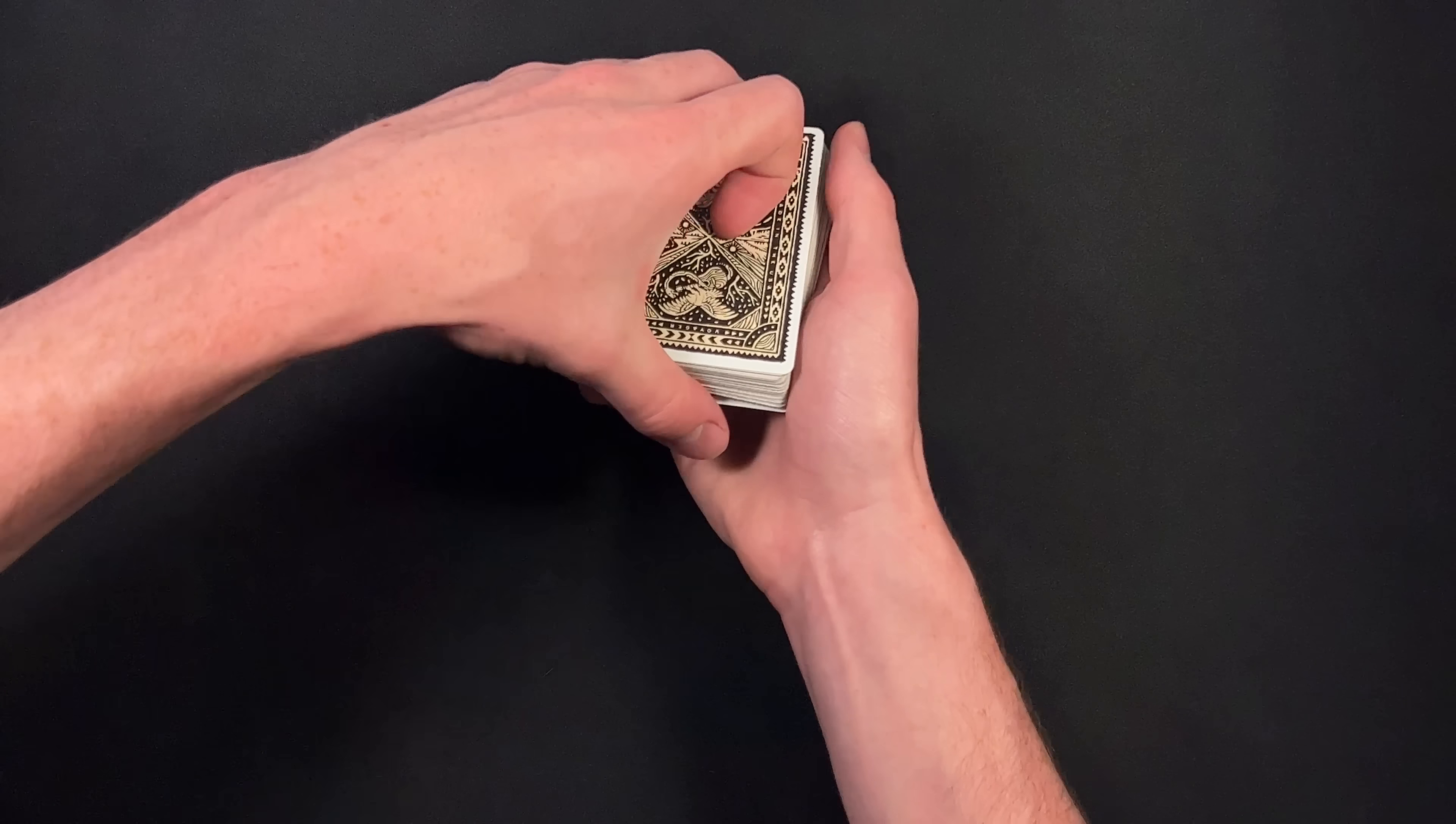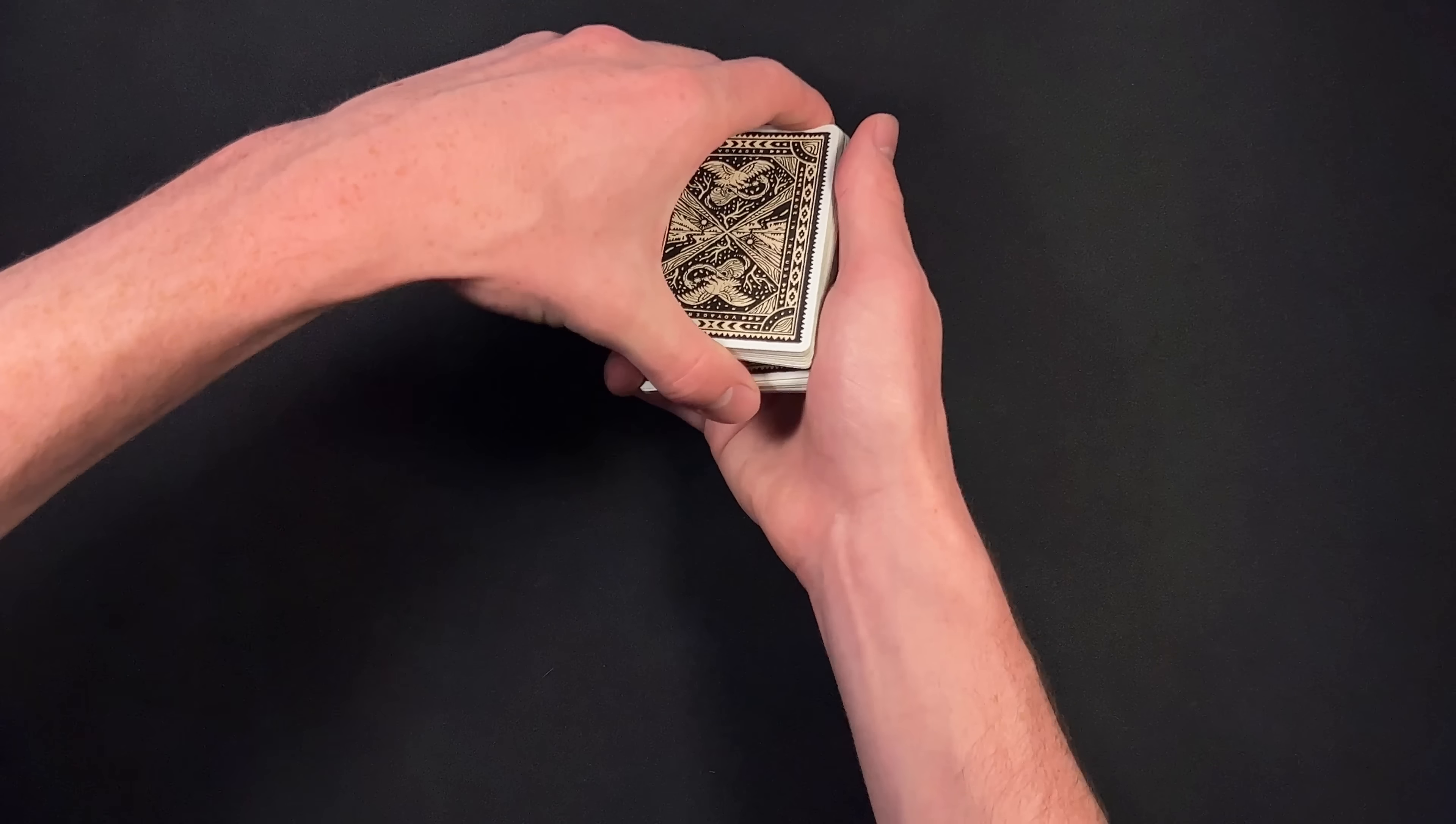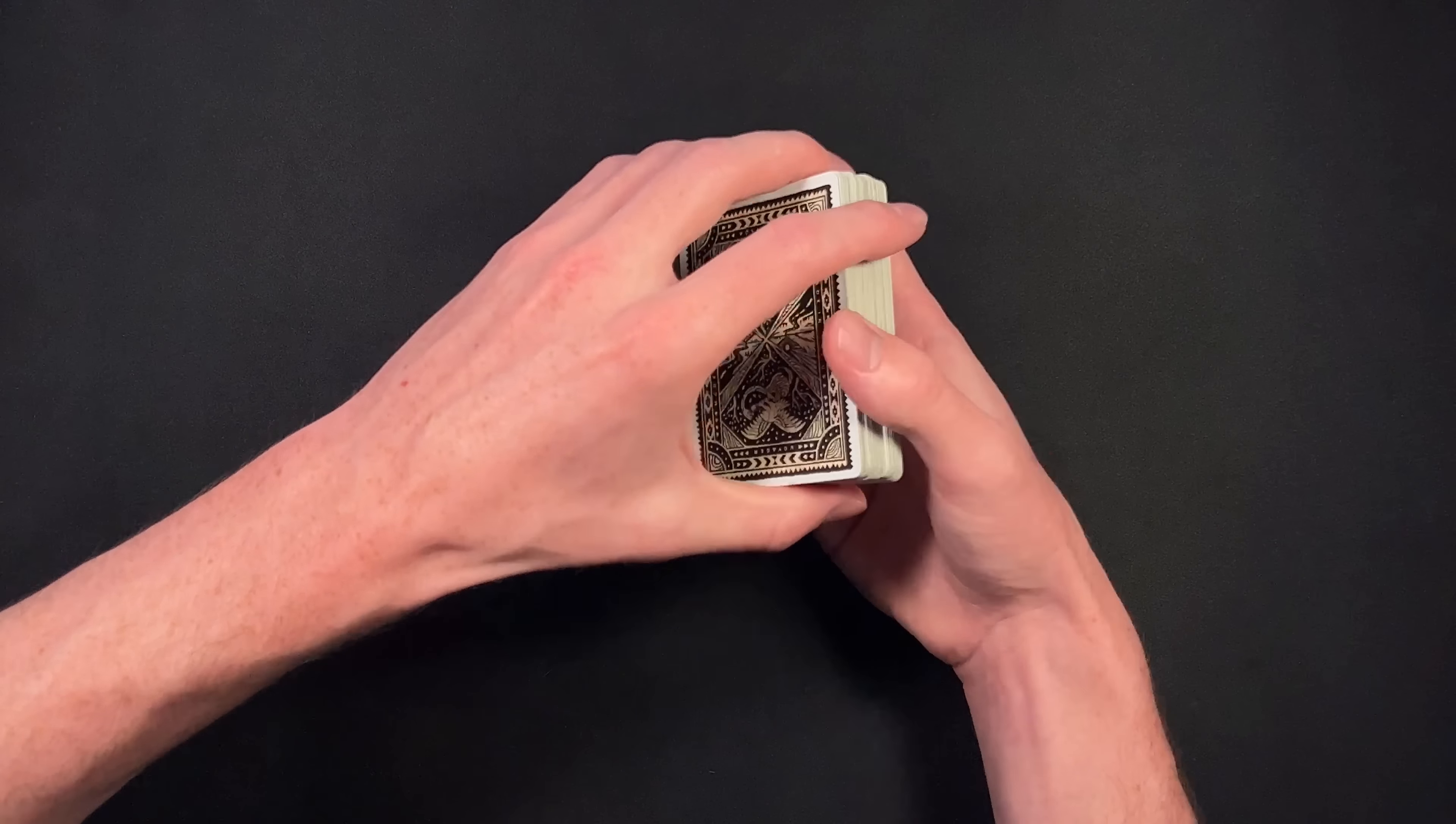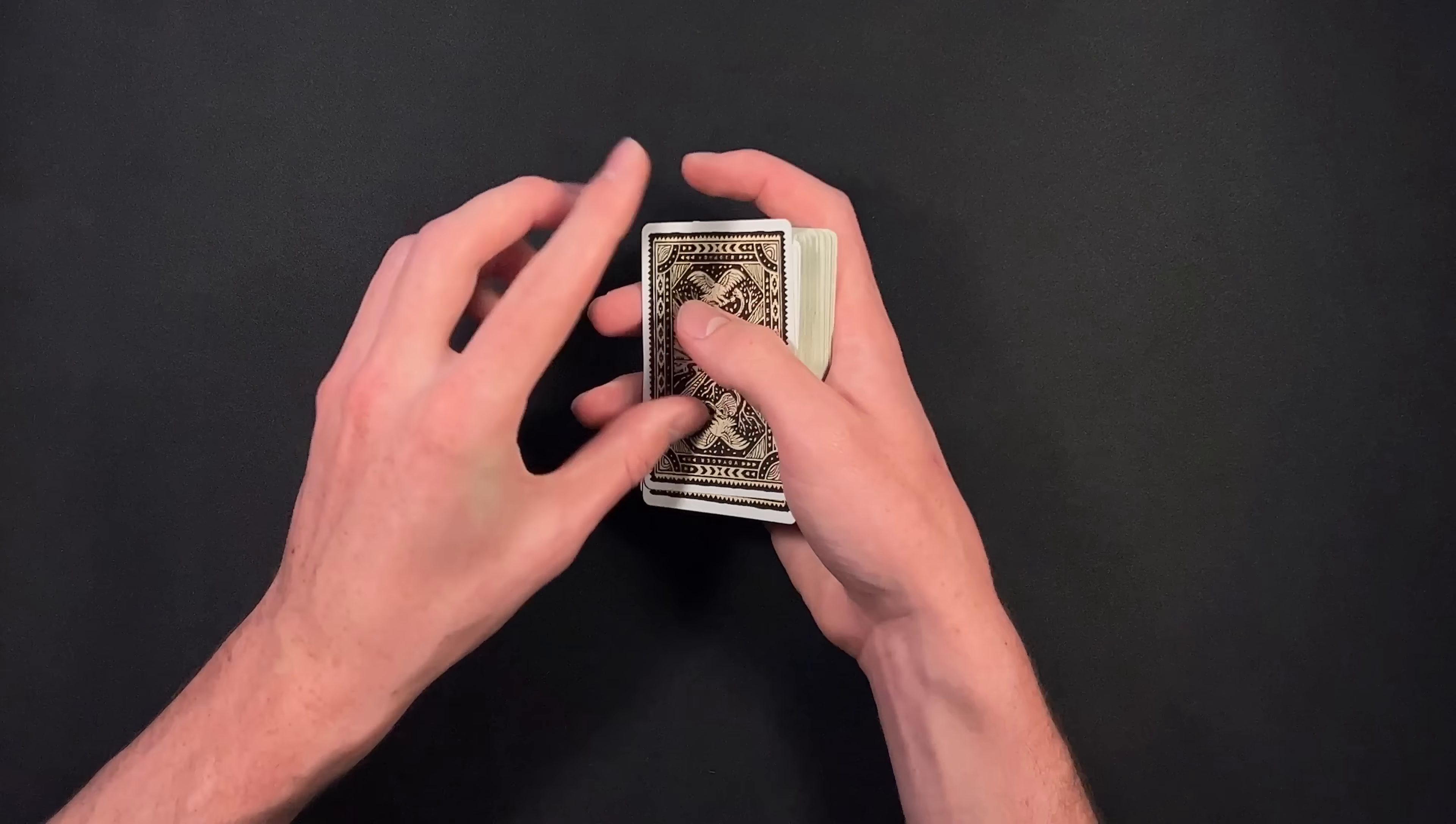That's what you need to do one more time. It's not too hard. You pull down, transfer it over to a thumb break, drop it off like this after you do your swing cut, you maintain the break, and then cut it right back to the top so you've got their selection, in this case the king of hearts, in the second position from the top.